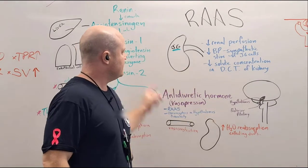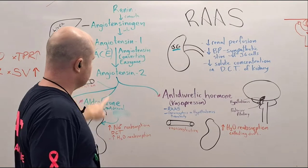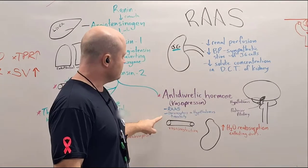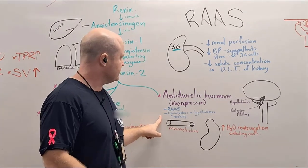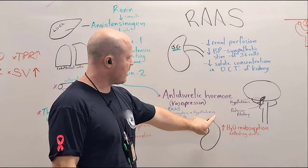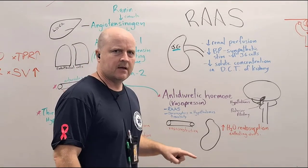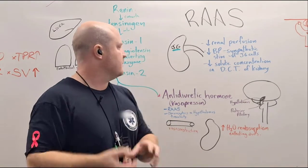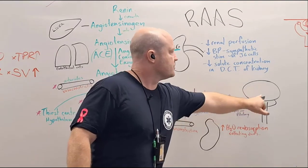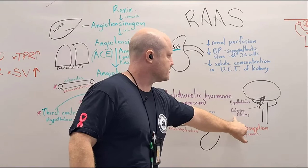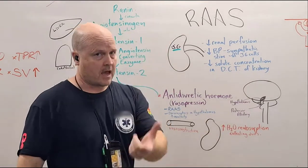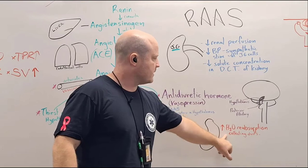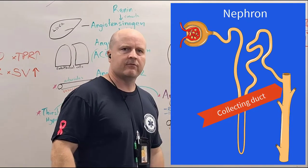What stimulates the release of ADH? One way is through RAS — the system we talked about where angiotensin 2 causes anti-diuretic hormone to be released. Another way is through osmoreceptors in our hypothalamus, which sense increased osmolarity. If the blood is more concentrated — less fluid, more solute — it stimulates our hypothalamus to cause release of ADH from our posterior pituitary. The actions of ADH include vasoconstriction, and it also increases water reabsorption from our collecting ducts in the nephron.